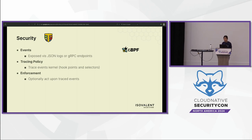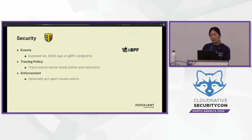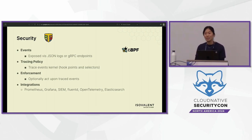Three important Tetragon concepts to be aware of are events, tracing policies, and enforcement. Events are exposed via JSON or gRPC endpoints — that's how you get data from Tetragon. Tracing policies are the custom resource that allows you to trace kernel events from hook points and selectors. Enforcement is how you act upon certain traced events — the last two really go hand in hand. There are also good integrations with Prometheus, Grafana, and OpenTelemetry for aggregated log tracking.